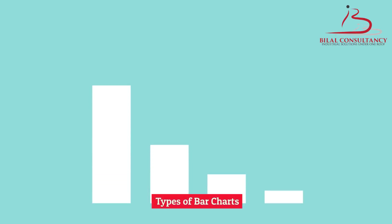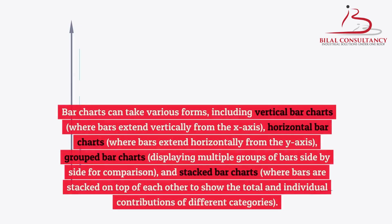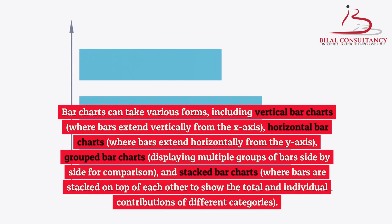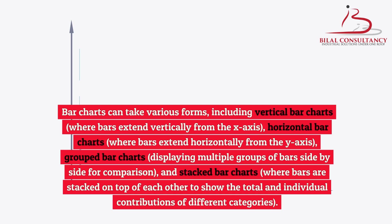Types of bar charts. Bar charts can take various forms, including vertical bar charts, where bars extend vertically from the x-axis, and horizontal bar charts, where bars extend horizontally from the y-axis.